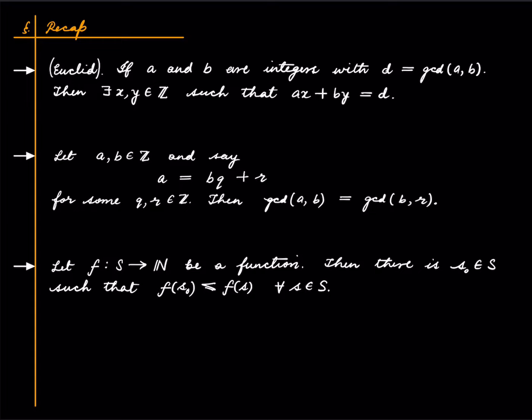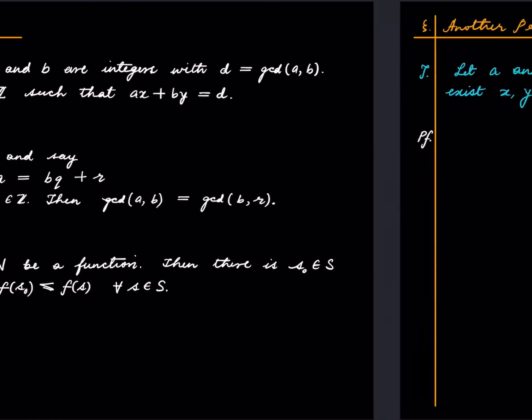And lastly, recall this particular very simple version of well-ordering principle: if we have a function from some set S to N, no matter what the set S is, there is some element S0 in capital S such that this happens for each element in S. So there is some S0 in capital S such that its image is smallest amongst all possible images. And this is nothing but well-ordering principle. Alright, so let's get started.